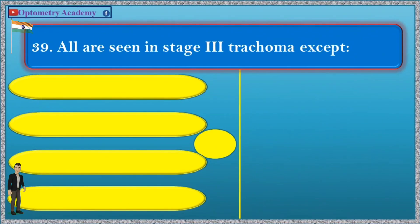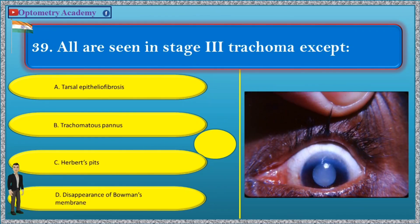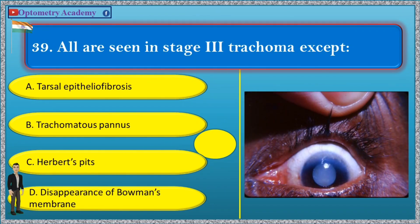Question 39. All are seen in stage 3 trachoma EXCEPT: A. Tarsal epitheliofibrosis, B. Trachomatous pannus, C. Herbert's pits, D. Disappearance of Bowman's membrane.